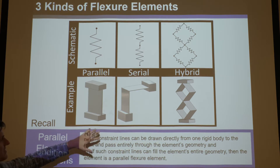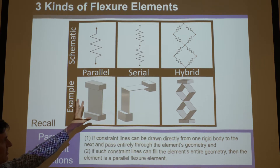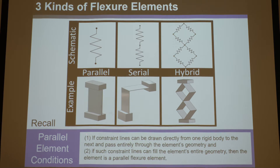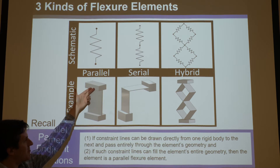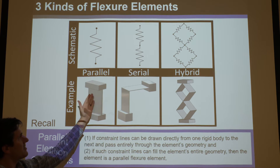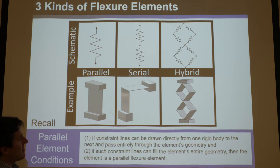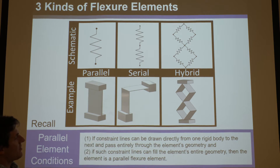There are parallel ones. The strict definition of a parallel system is: if constraint lines can be drawn directly from one rigid body to the next and pass entirely through the element's geometry, and if such constraint lines can fill the element's entire geometry so the whole thing is blue, then the element is a parallel element.